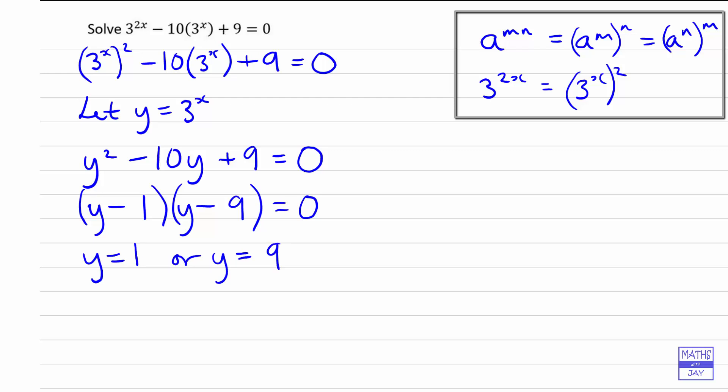And remember that y was actually 3 to the x. So now we think 3 to the x again, so 3 to the x is 1 or it's 9. Now if these were difficult numbers, you could use your calculator to work out what x is. You could take log to both sides, but very straightforward here because we've effectively got powers of 3.